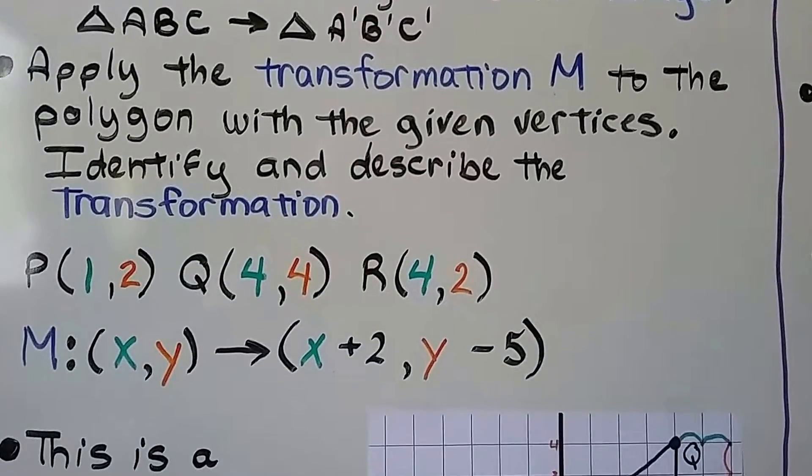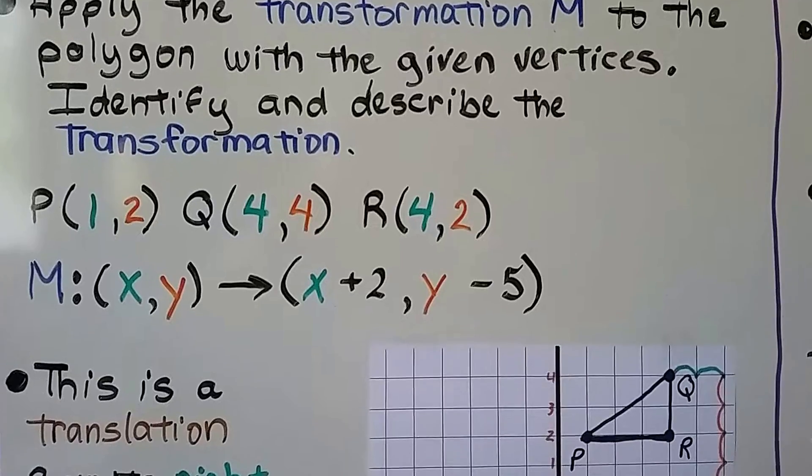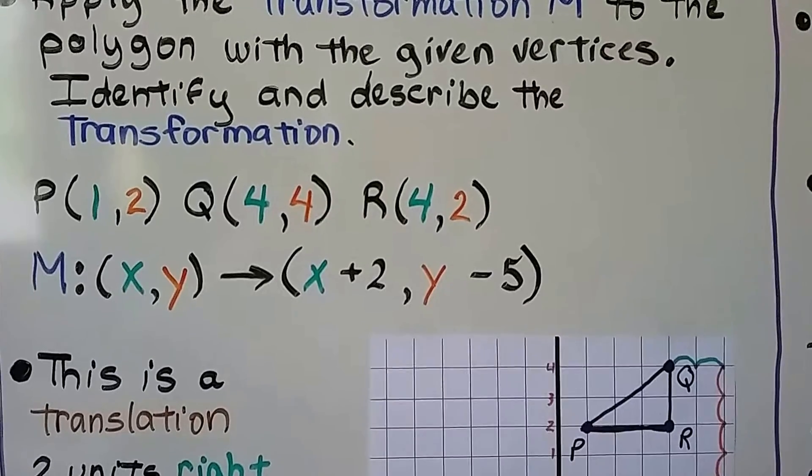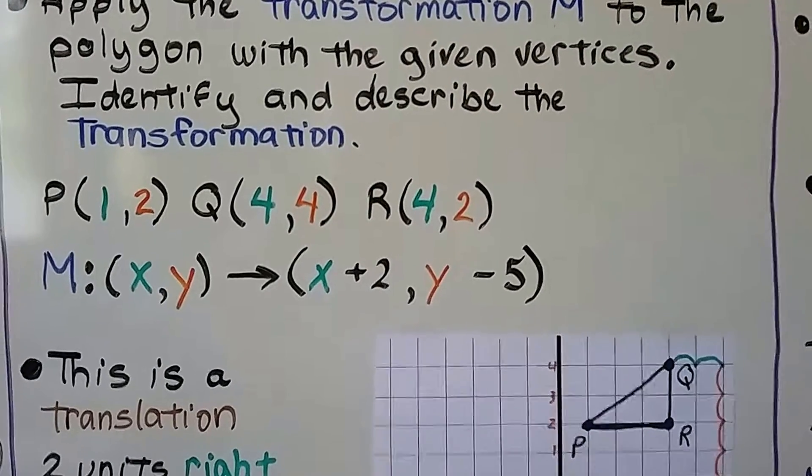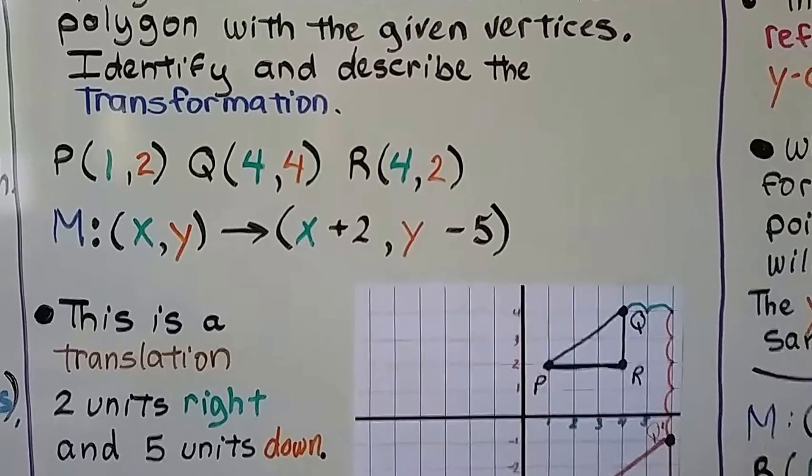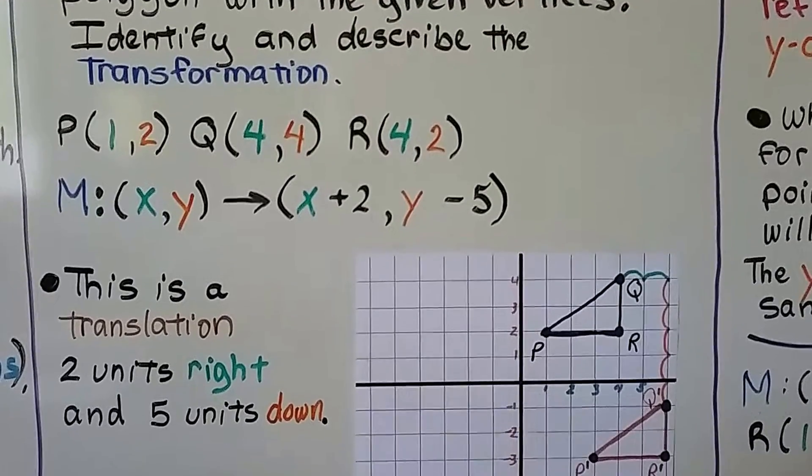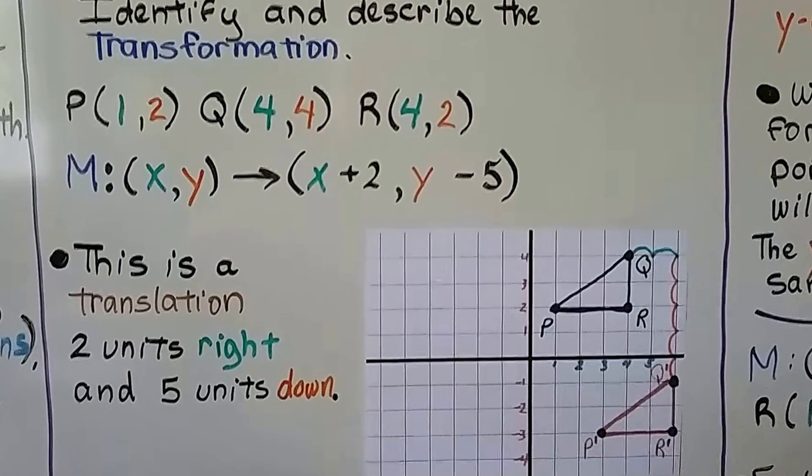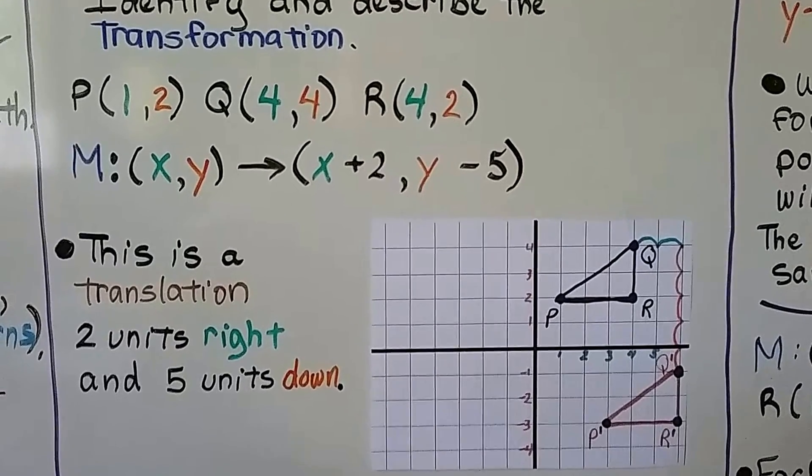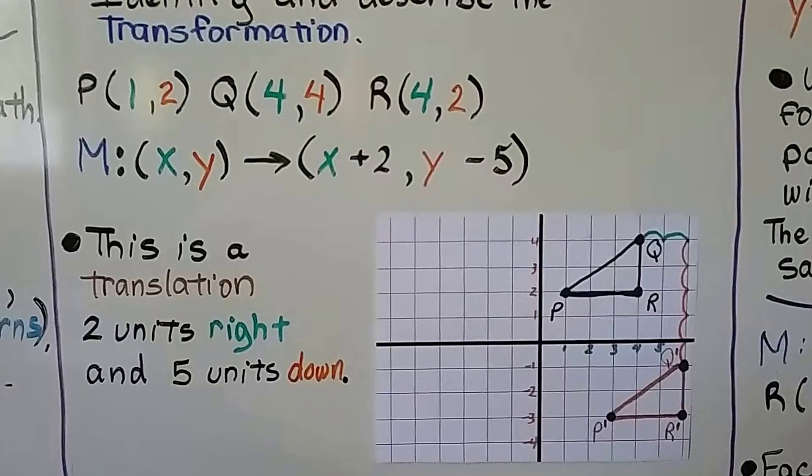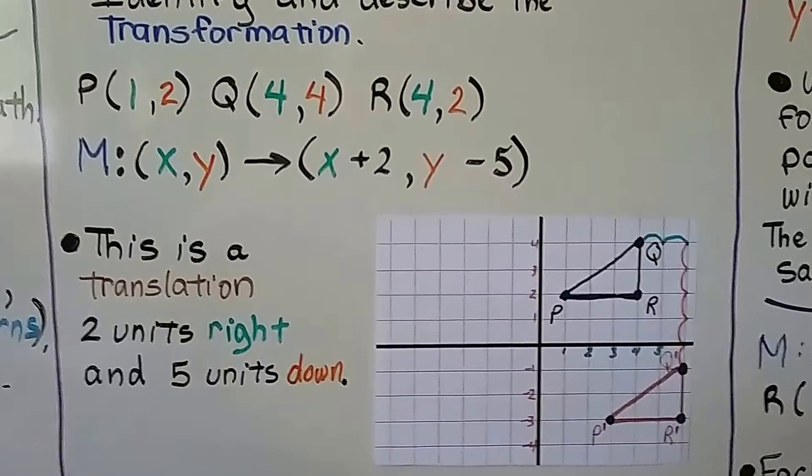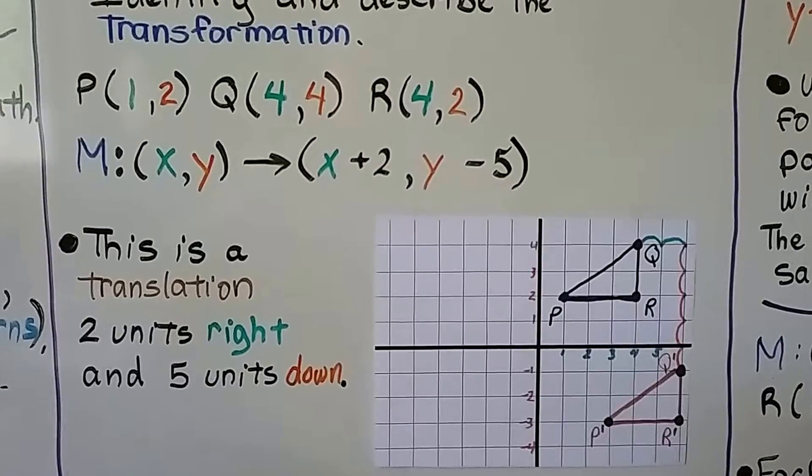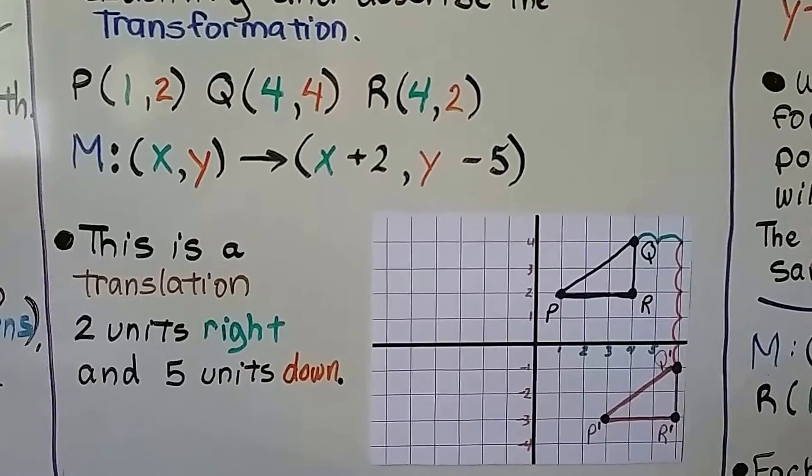Apply the transformation M to the polygon with the given vertices. Identify and describe the transformation. So we have points P, Q, and R on our coordinate plane here. P is at (1, 2), Q is at (4, 4), R is at (4, 2). And our transformation M says (x, y) is going to map to (x+2, y-5).